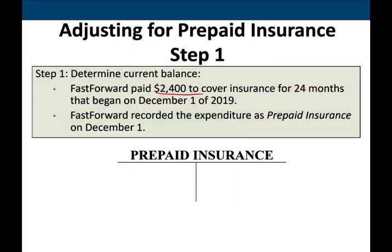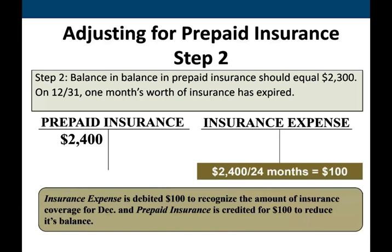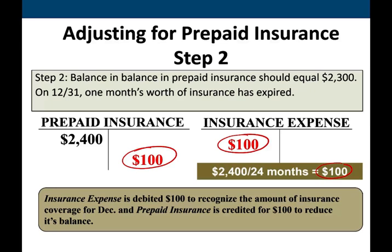Let's look at this example. We paid $2,400 to cover a 24-month insurance policy beginning December 1st, and this is properly reflected in the trial balance as of December 1st. On December 31st it still shows $2,400 unless we do something. Now, a month later — this policy covers 24 months, so $2,400 divided by 24 months equals $100. That means $100 of this policy expires each month, increasing insurance expense. So we credit prepaid insurance by $100 and debit insurance expense by $100.